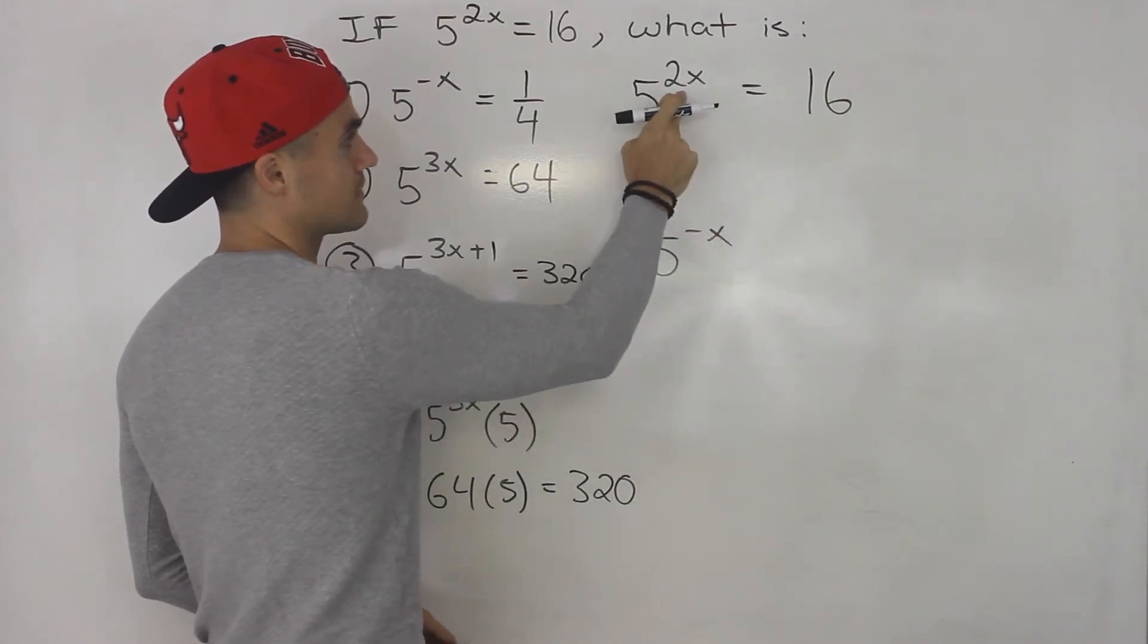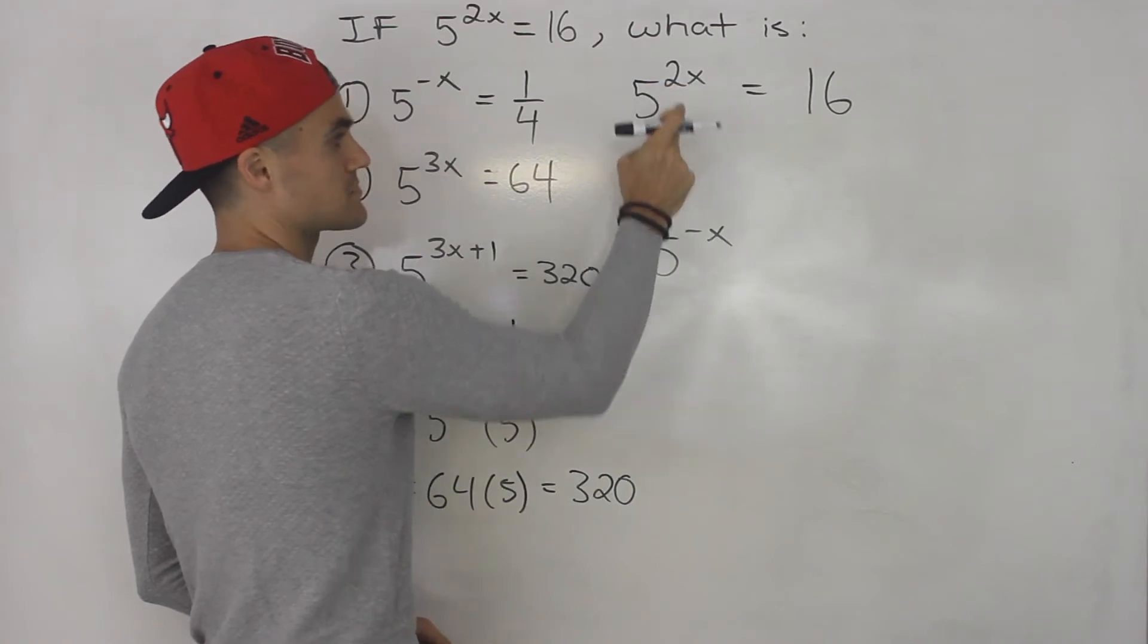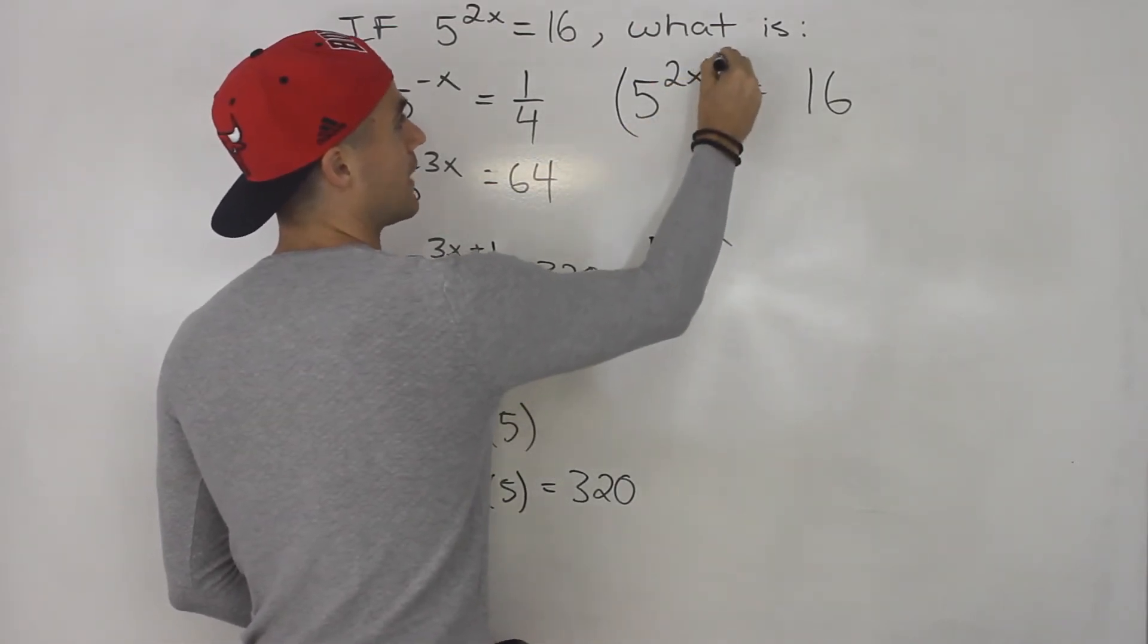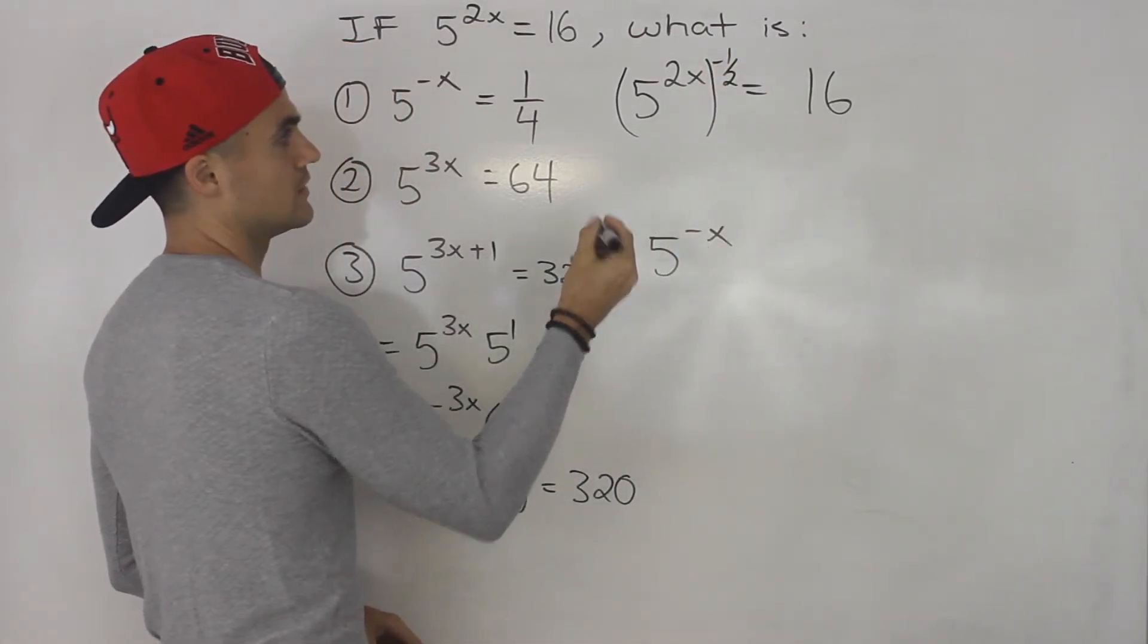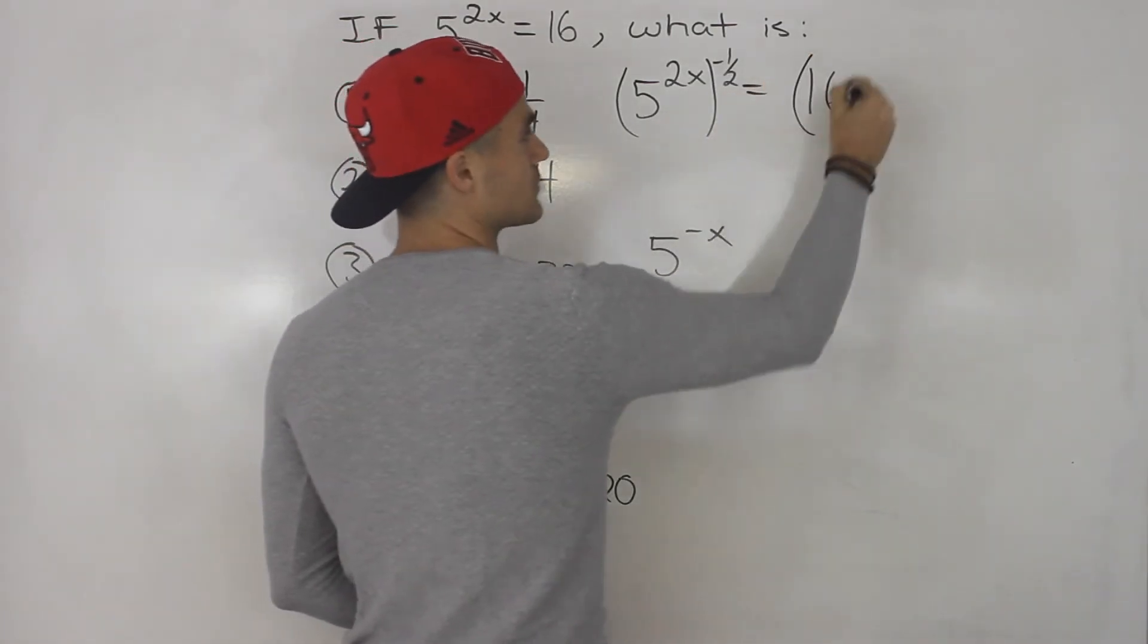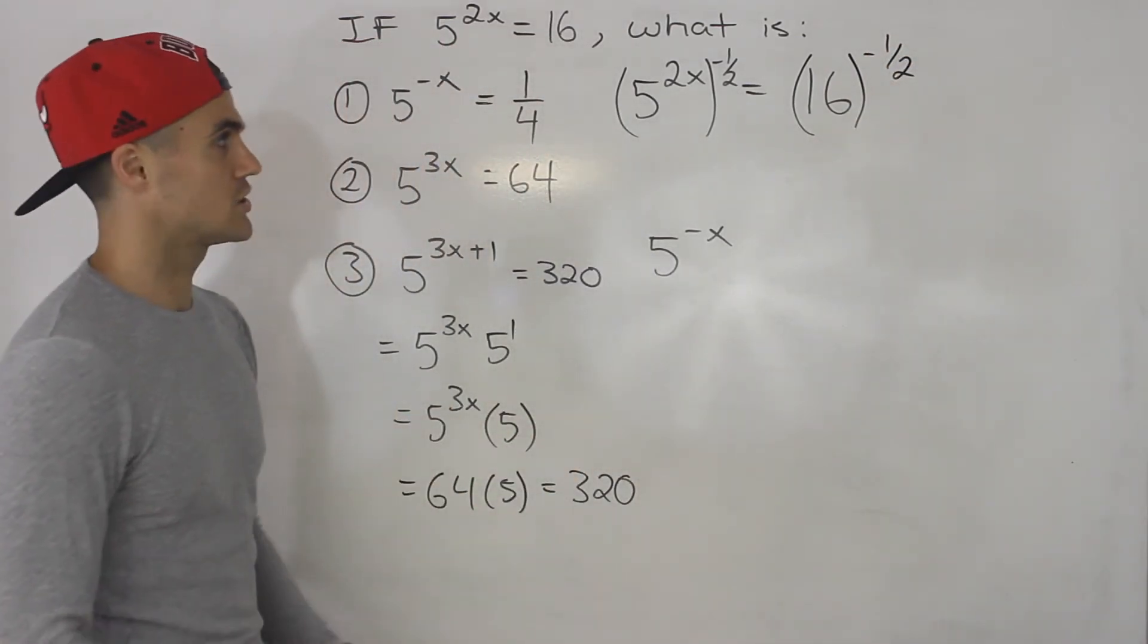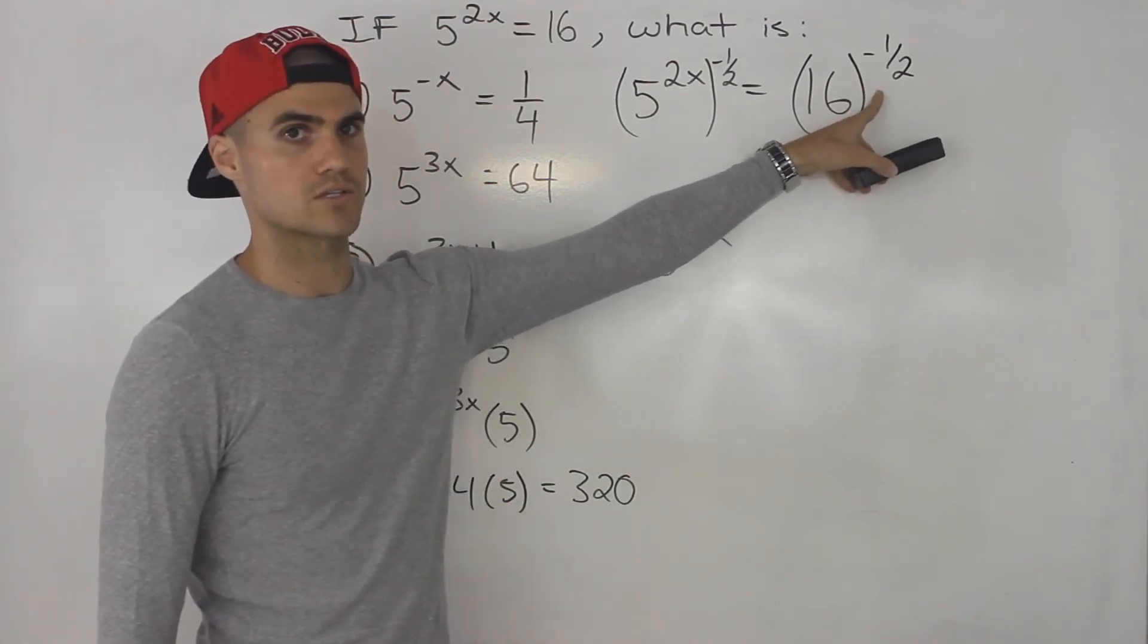So what do we have to take this to the power of negative x? Well, we would multiply it by negative a half, right? Because 2x times negative a half gives us negative x. So we're taking this to the power of negative a half. So that means we have to take this to the power of negative a half. Problem with this method in this section is we don't know how to deal with exponents like this. These are rational exponents, right?